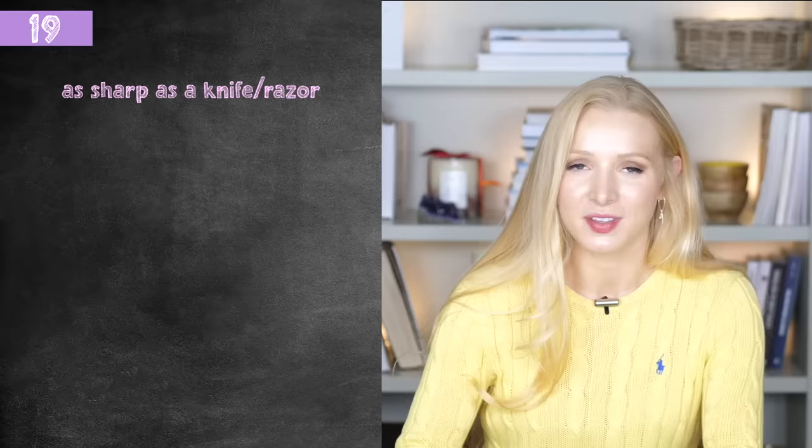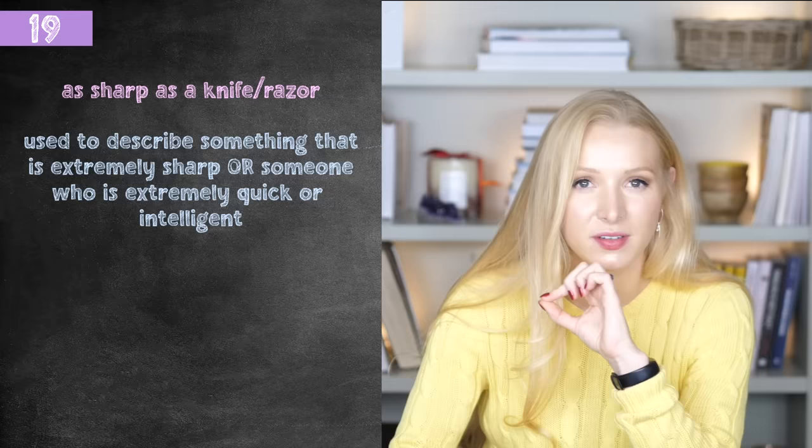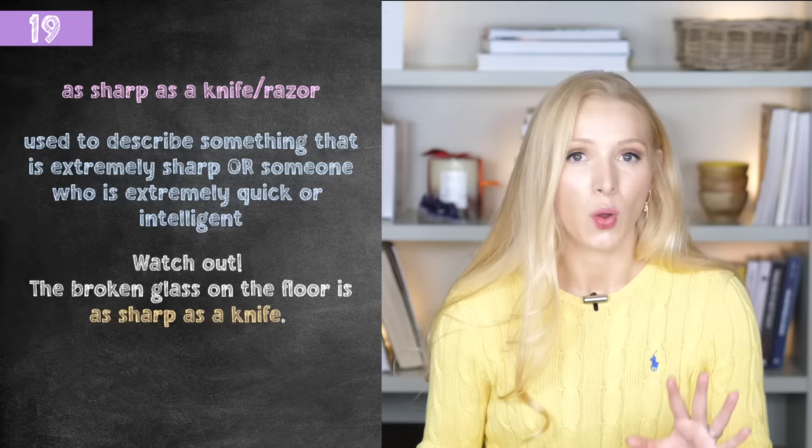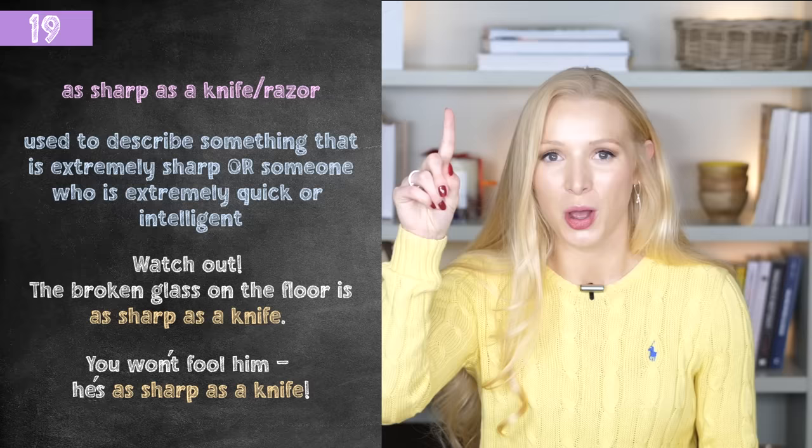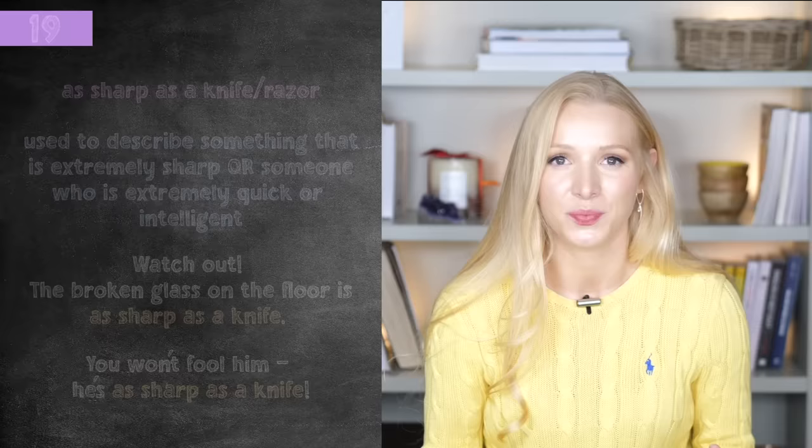Now we're moving on to four similes that can be used to describe people. Number 19 is 'as sharp as a knife' or 'as sharp as a razor' — both are fine, but as sharp as a knife is more British. This is used to describe someone who is very quick and intelligent — you can't fool them. It can also describe something that is very sharp to the touch. For example: watch out, the broken glass on the floor is as sharp as a knife. Or: you can't fool him — he's as sharp as a knife.